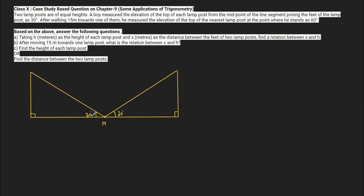Now the boy is moving 15 meters towards one of the lampposts, and the angle of elevation becomes 60 degrees. Originally the boy is at point M. He moves toward one of the lampposts — let's take the right lamppost. On reaching point P, which is 15 meters from point M, the angle of elevation is 60 degrees. This distance MP is 15 meters as per the question.